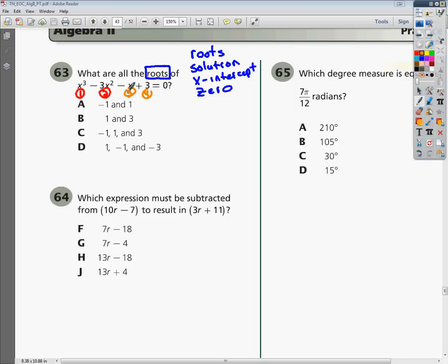And again, factoring by grouping means I'm just taking out my GCF pretty much. So I should have x cubed, I'm putting my first and second together, minus 3x squared. That's my first group, and then my second group is going to be the negative x plus 3.